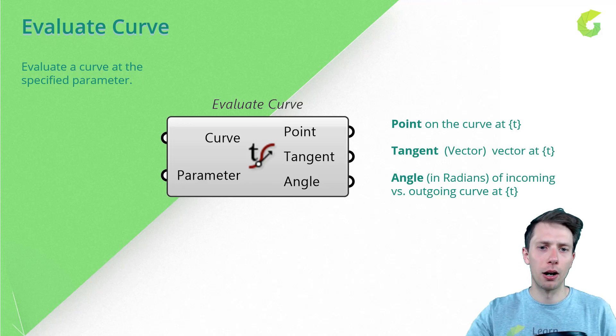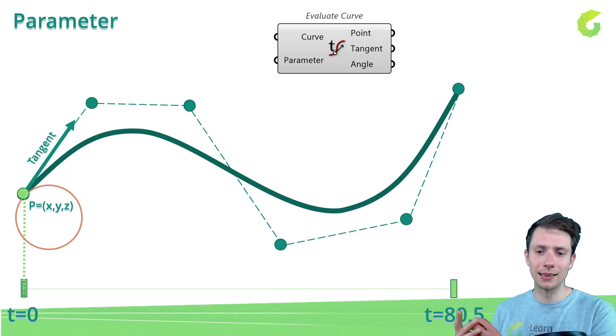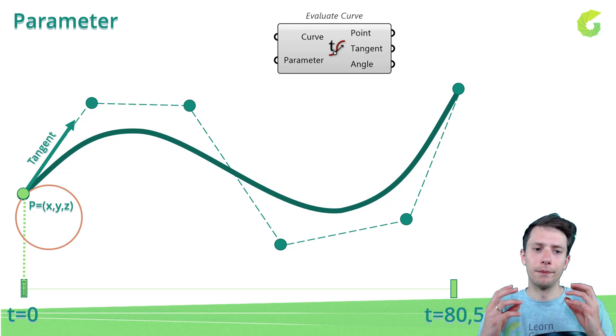So let's take a look at the curve. We have our parametric curve which is defined from zero as our t=0, the start, and our domain ends at 80.5. You can see this value over here. If we are going to check our parameters, we connect our curve to the curve and parameter, we check at zero. So we will get our value with our point X, Y, and Z coordinate. And we will get the tangent.